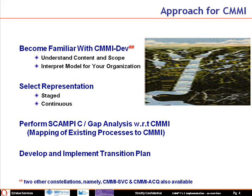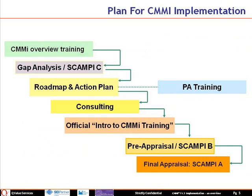Subsequently, a SCAMPI C or gap analysis is performed for mapping existing processes to CMMI, based on which a transition plan is developed for implementation. The transition plan includes a roadmap and action planning, including any trainings required by the organization and advisory support as consulting.